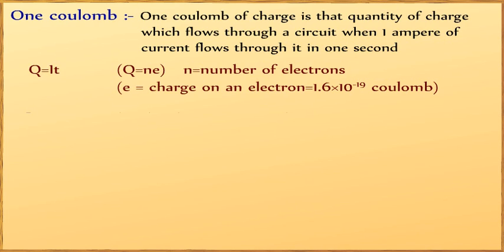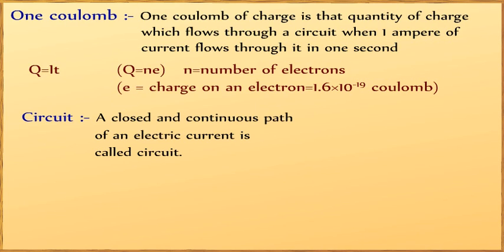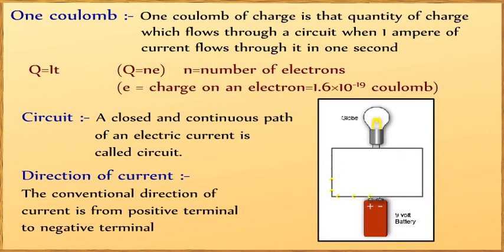What is a circuit? A closed and continuous path of an electric current is called a circuit. Direction of current: the conventional direction of current is from positive to negative terminal.